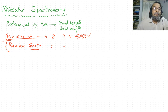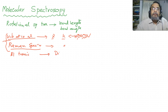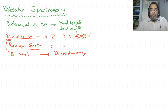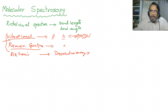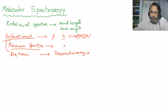Next comes the electronic spectrum. Using electronic spectra we can determine the dissociation energy of the molecule. In electronic spectra, dissociation energy, electronic energy levels of the molecule and stability of the molecule can be determined.